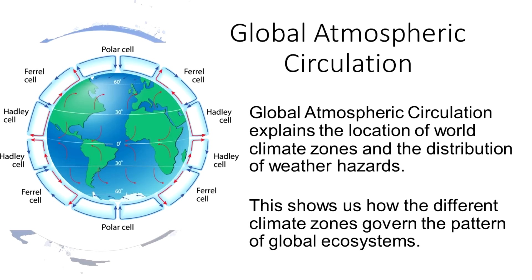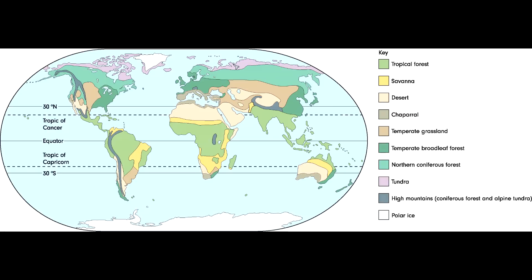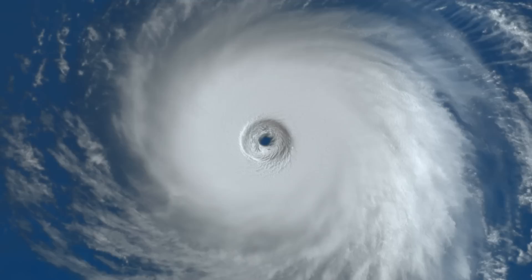Global atmospheric circulation is probably one of the hardest things on the course, so it's definitely worth going back and checking out my video on it. It's a very complicated topic, but don't forget the context: the whole reason we look at global atmospheric circulation is because it helps explain why we get different climate zones around the world, and there is a strong link between those different climates and different ecosystems.